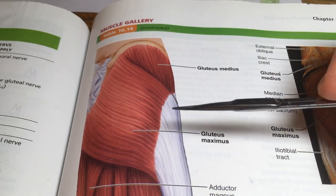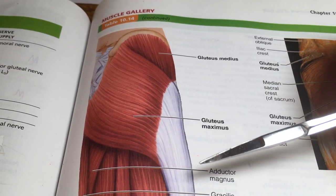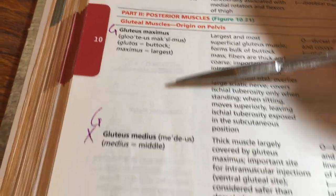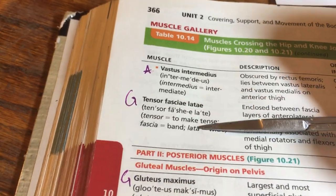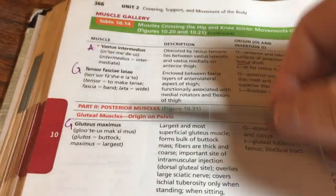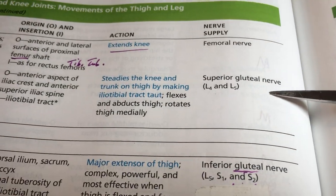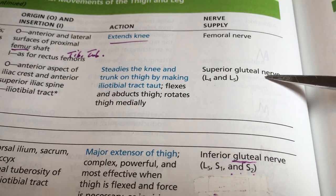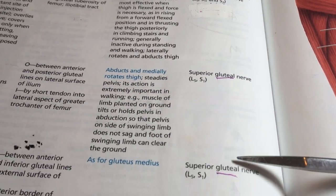The gluteal nerve is going to innervate four muscles. Those muscles are gluteus maximus, gluteus medius, gluteus minimus, and tensor fascia lata. All four appear on page 366. We have gluteal nerves here — don't worry whether they are superior or inferior, only that they are all gluteal outflow.